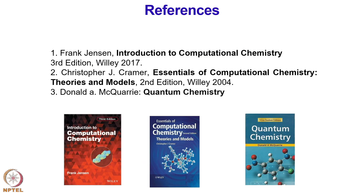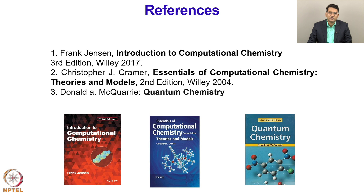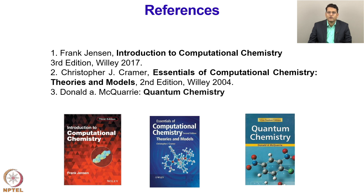In this course, we are going to use these three books as our reference. The first is Frank Jensen's Introduction to Computational Chemistry. The second one will be Christopher Cramer's Essentials of Computational Chemistry, Theory and Models, second edition. And the third one, to learn the quantum chemistry we need for this course, we are going to use Donald A. McQuarrie's Quantum Chemistry.